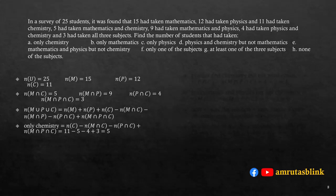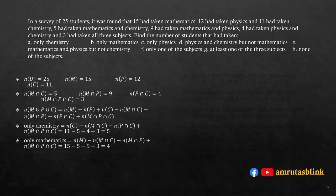Students taking only mathematics: N(M) - N(M∩C) - N(M∩P) + N(M∩P∩C) = 15 - 5 - 9 + 3 = 4. Students taking only physics: 12 - 9 - 4 + 3 = 2.